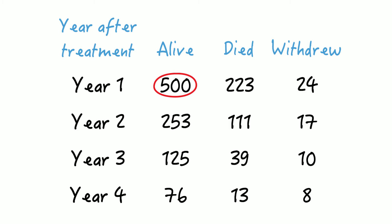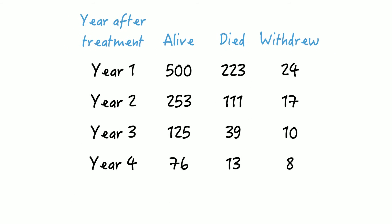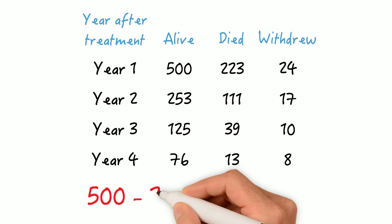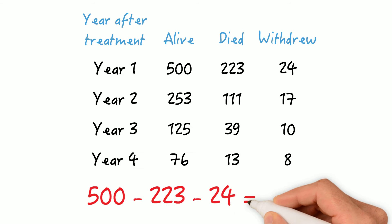500 people joined at the outset, 223 died during the first year, and 24 withdrew. So we're left with 253 at the beginning of year 2, since 500 minus 223 minus 24 equals 253. Make sense so far?